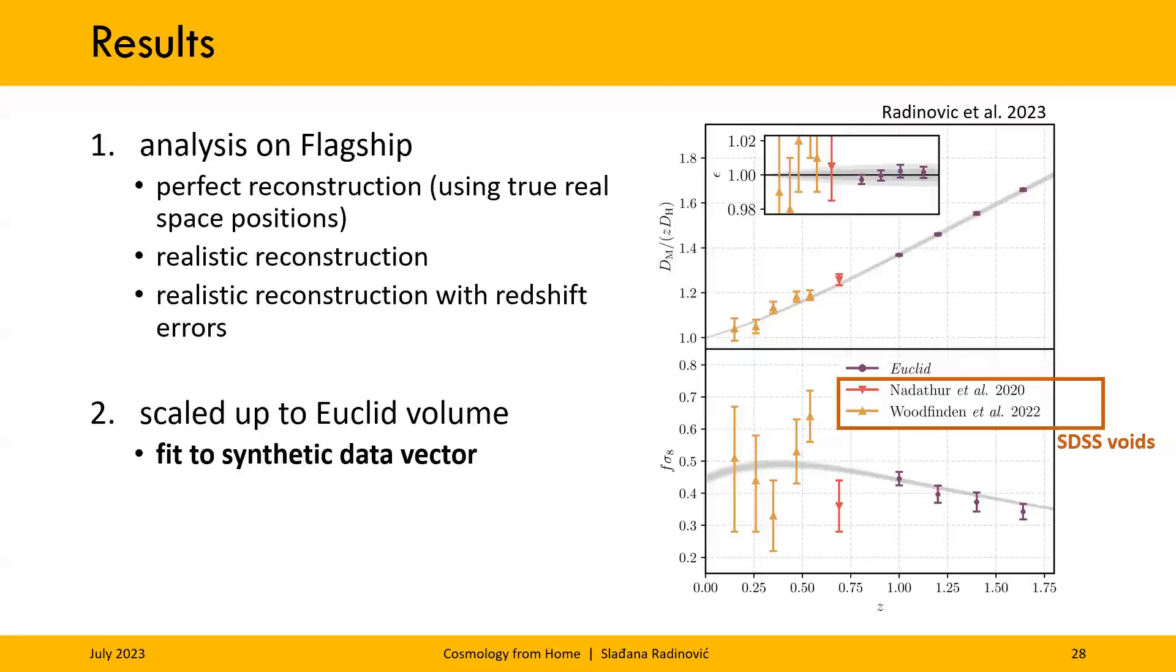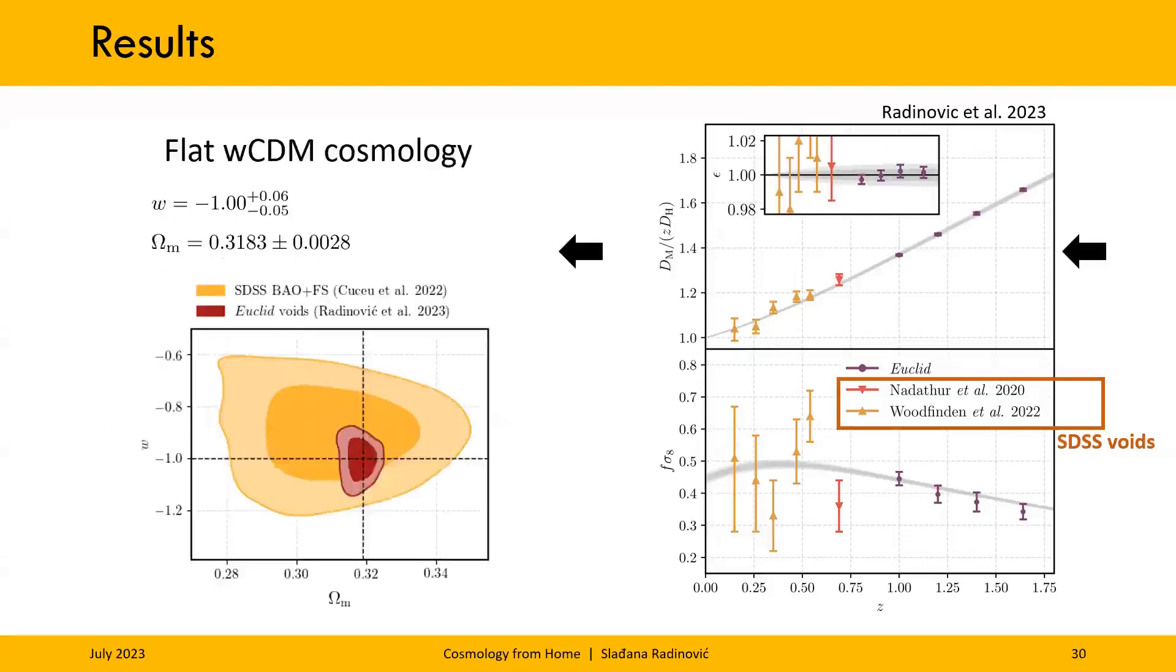So here I showed the expected constraints on the same two parameters as before, and I include the current constraints from SDSS voids at lower redshifts, as a comparison. The shaded bands here, and also in the previous plot, represent Planck constraints extrapolated to the redshifts given. So I think this plot really shows the benefit of higher redshift surveys like Euclid. In particular, if we just take the AP constraints on top and translate them into constraints on dark energy. So taking, for example, a simple extension to lambda CDM, a model like omega CDM, which leaves free the dark energy equation of state. We get these constraints.